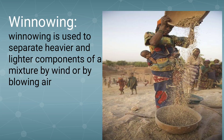Winnowing is used to separate heavier and lighter components by using wind or air. If you go to the field after harvesting, you can observe farmers taking seeds and dust particles in a plate-like structure, standing on a raised platform and tilting it slightly so the mixture moves out slowly. When it moves out, the air blows the lighter particles away and the heavier particles remain.